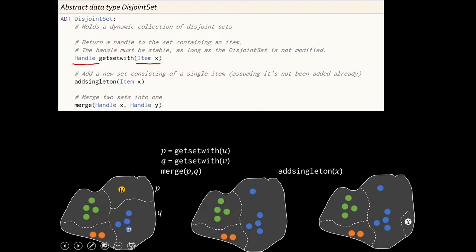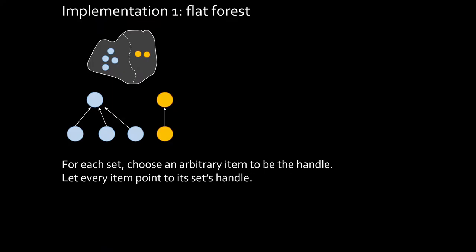Let's think how we might implement this. Here's a very simple implementation. I'm going to represent each set as a tree. For each of the trees, I'll pick out one vertex to be the representative of the set. I'll make all the other vertices point to it. So I'm calling this the Flat Forest Implementation. It's a forest because it's made up of a collection of trees. And it's flat because each tree has depth one.